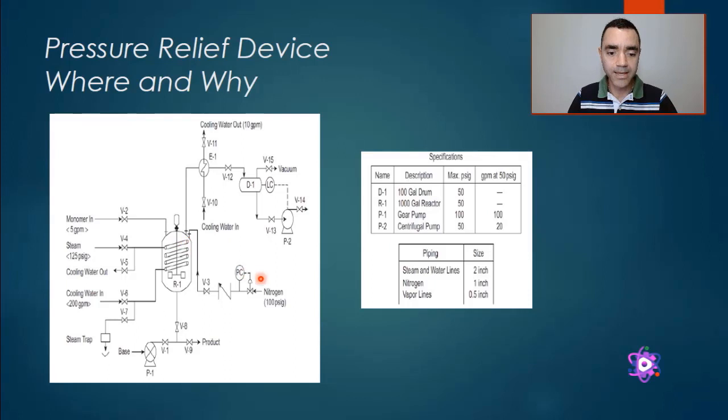If I add 100 psig inside my reactor and my reactor is only able to handle 50 psig, I will rupture this equipment. To prevent that, I need to add a pressure relief device.